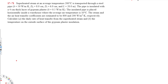This problem involves superheated steam at an average temperature of 200°C transported through a steel pipe. The pipe is insulated with a 4 cm thick layer of gypsum plaster and placed horizontally inside a warehouse where the average air temperature is 10°C. The steam and air heat transfer coefficients are 800 and 200 respectively. We need to calculate the daily rate of heat transfer and the temperature on the outside surface.